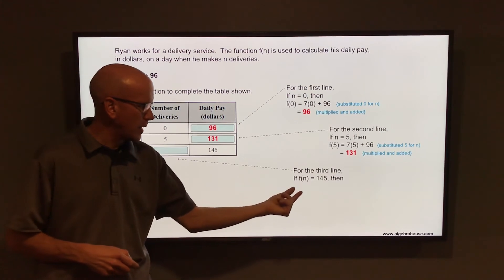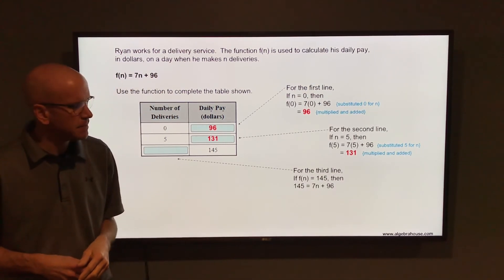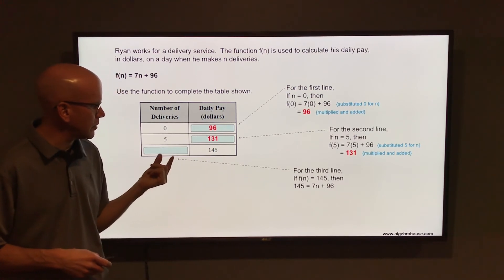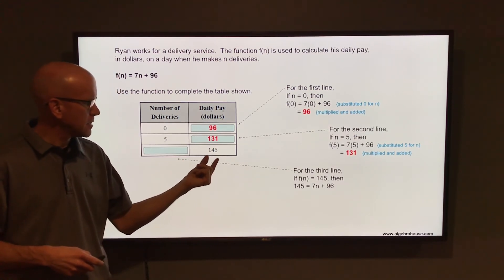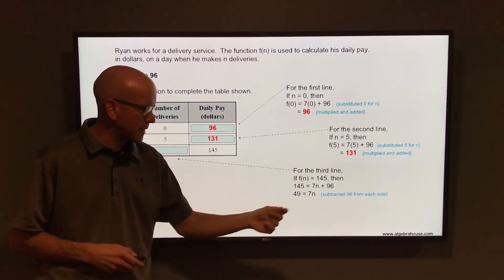So replace the f(n) with 145. That equals 7n + 96. And if you solve that for n, that will tell you how many deliveries it takes to make 145 dollars. Subtract 96 from each side. You have 49 equals 7n.